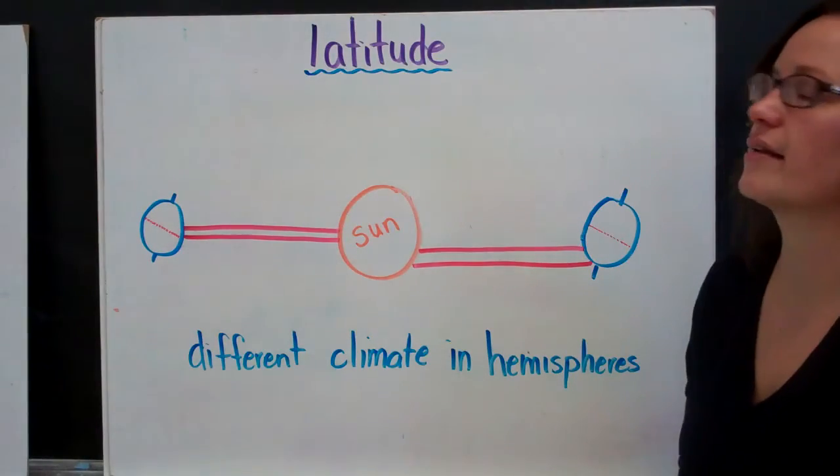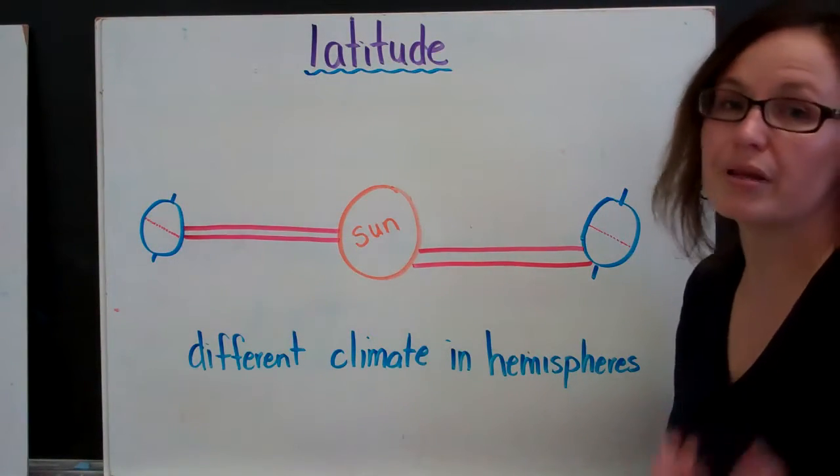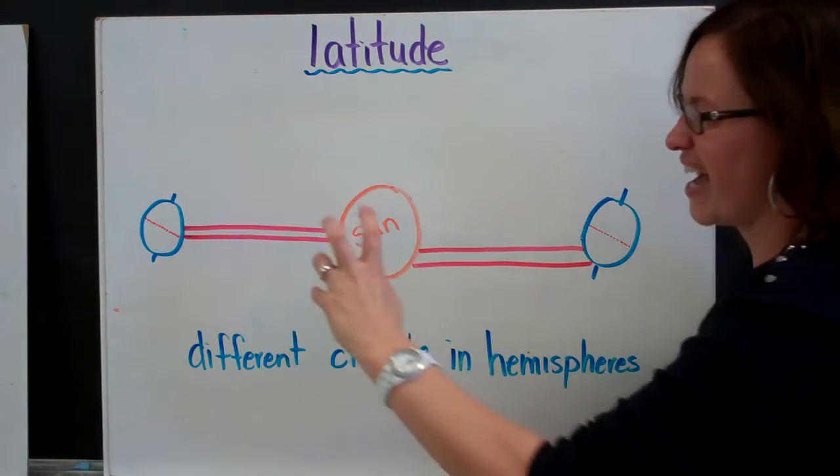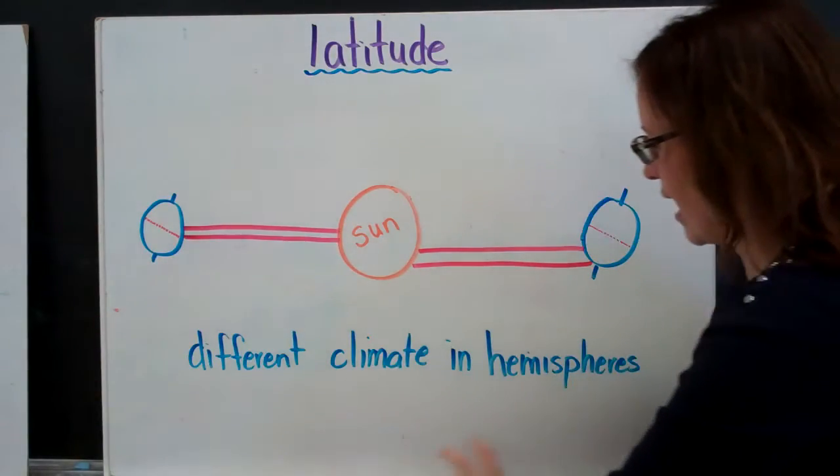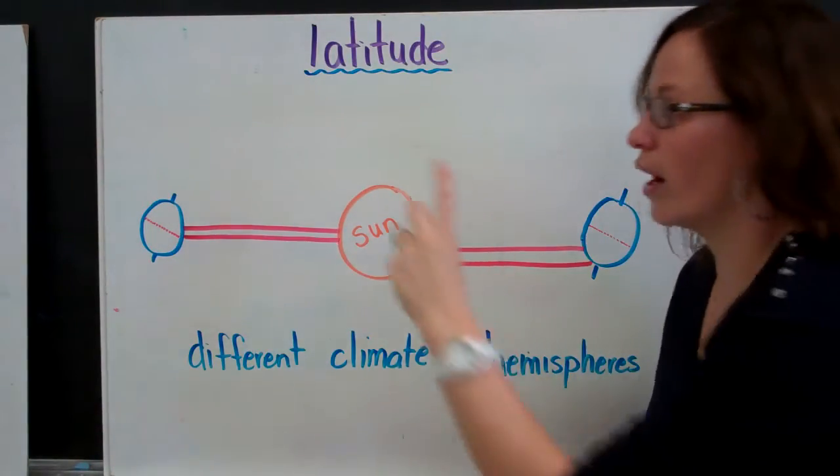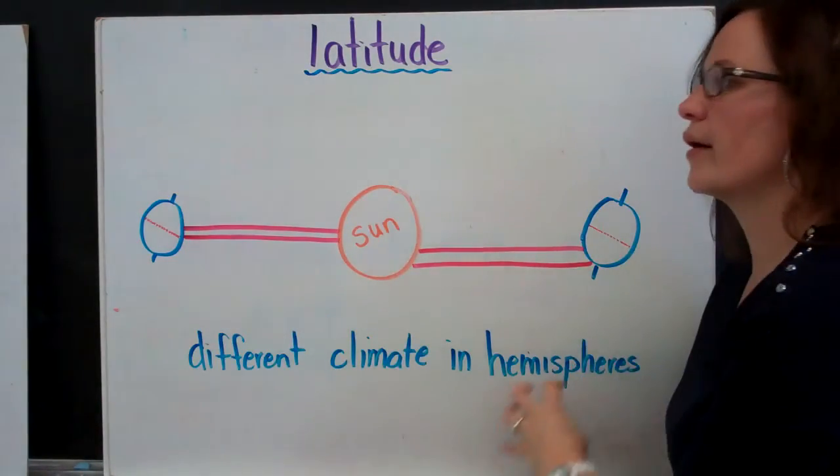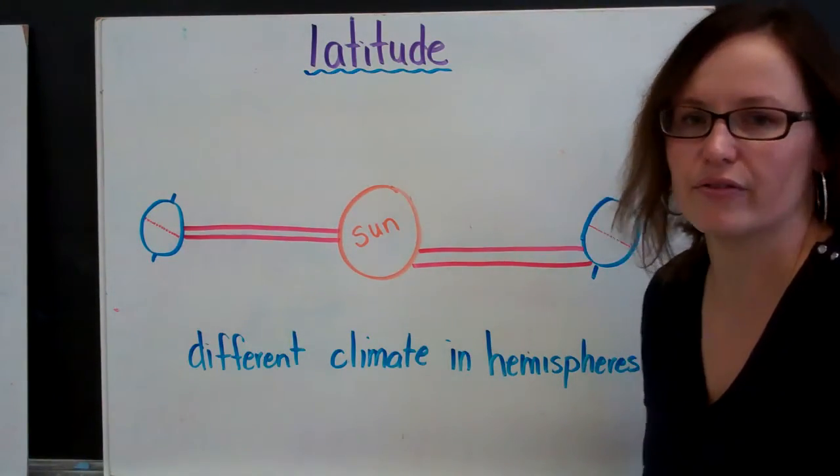First, latitude. Latitude has to do with your place on the planet. As we know, the Earth is tilted on its axis and it rotates around the Sun. It takes one full year for the Earth to go its full rotation and depending on where it is, is connected to our kind of climate.